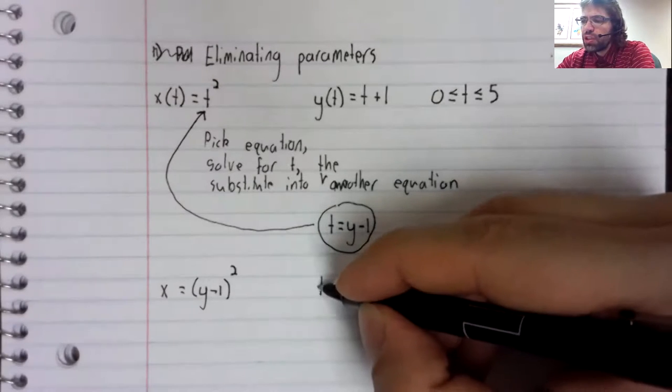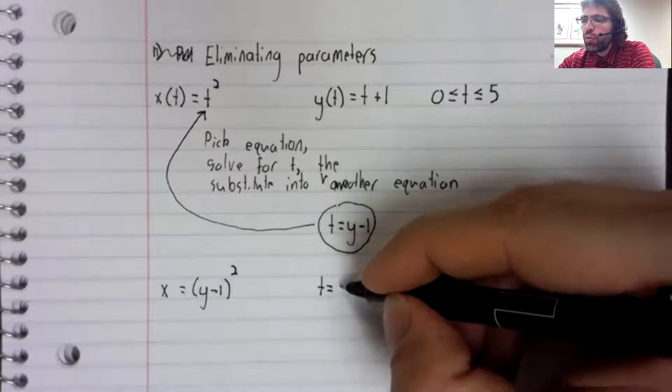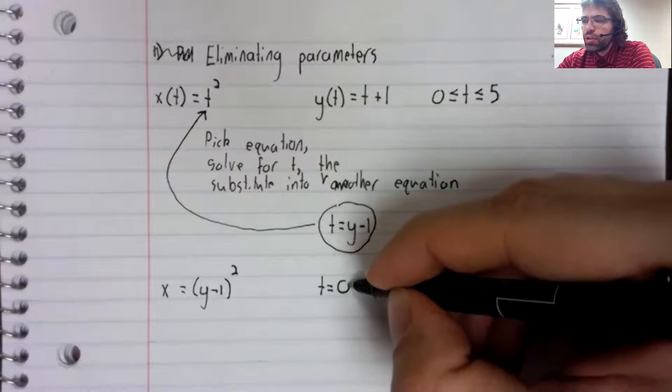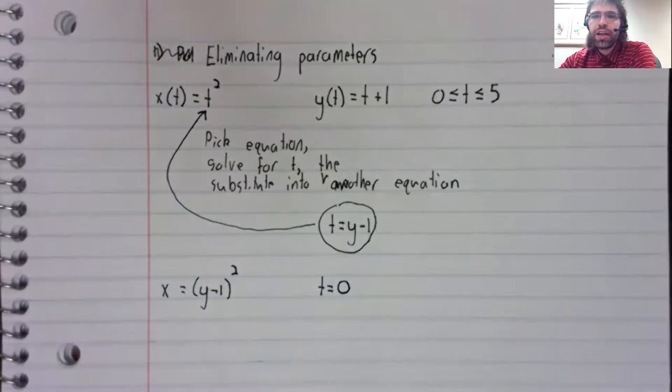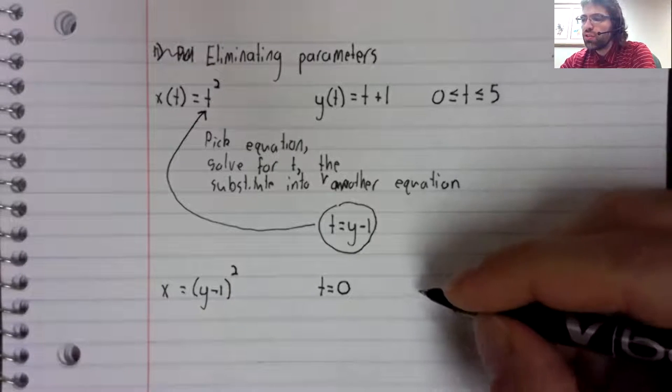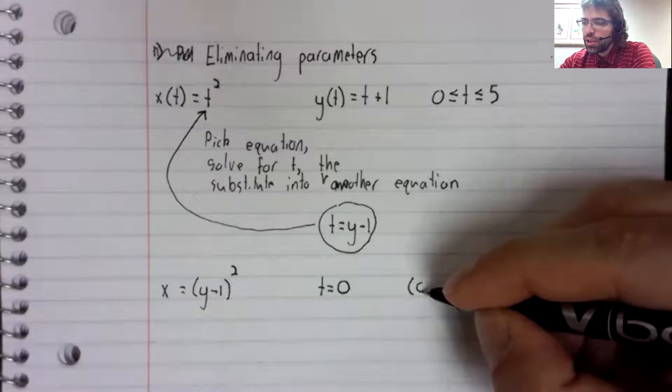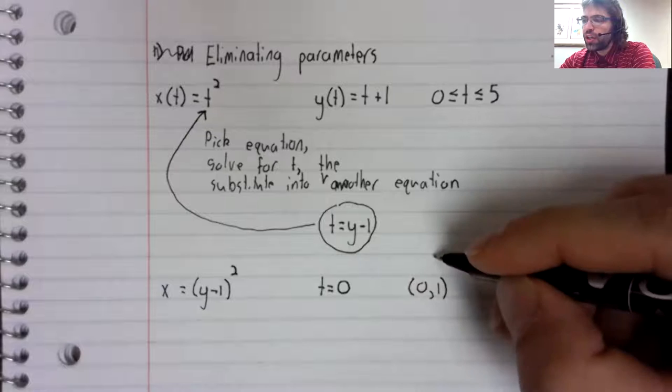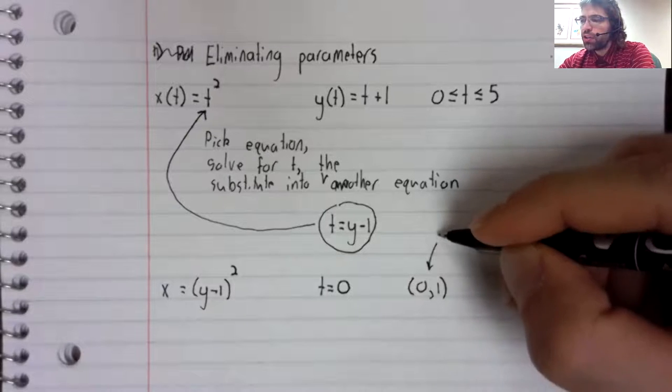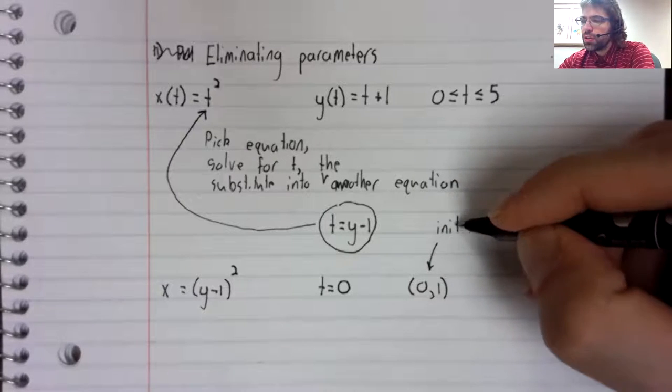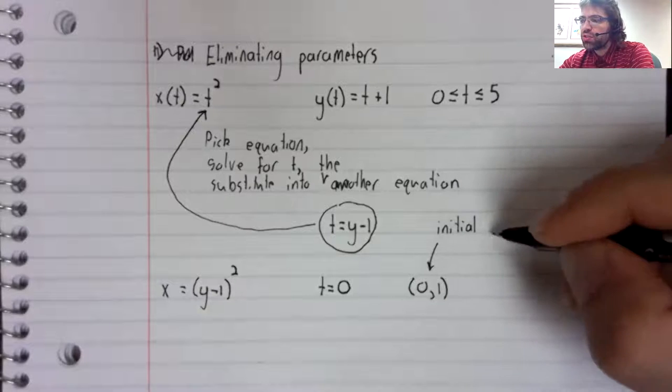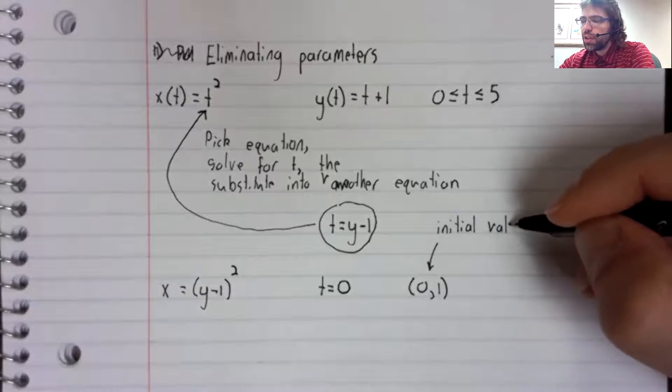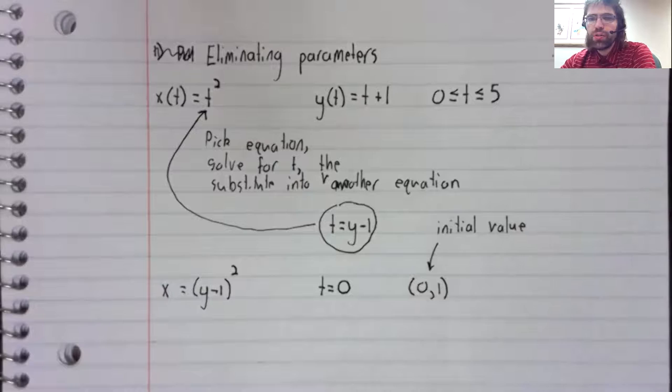It's probably going to be helpful to look at a few points. So when T equals zero, X is zero, and Y is one. So there's our initial value.